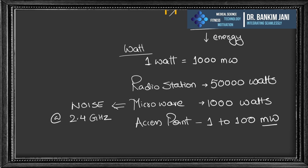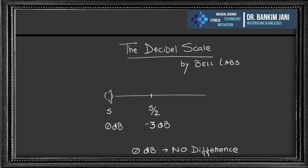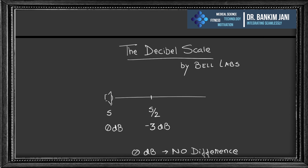Because a microwave also emits at 2.4 GHz, and its signal is much stronger, it is sufficient to disturb the signals of our access point — that is what is called noise. Similarly, cordless phones also operate on 2.4 GHz and can affect our access point.